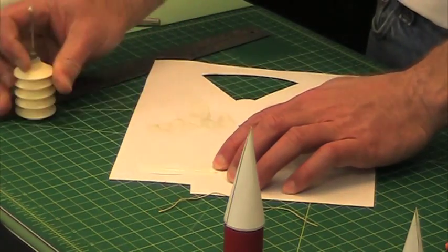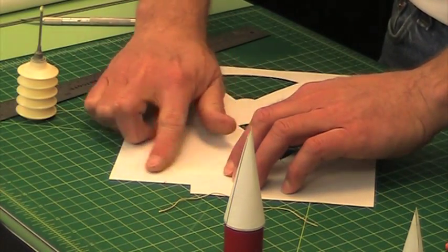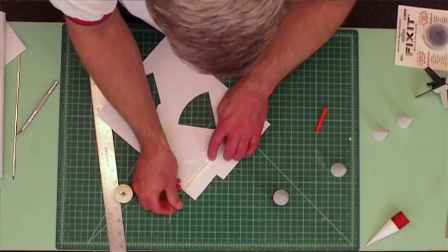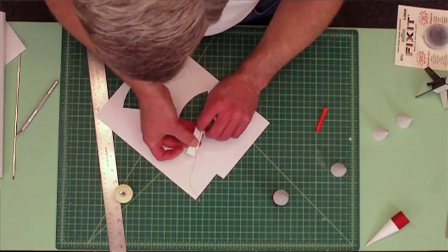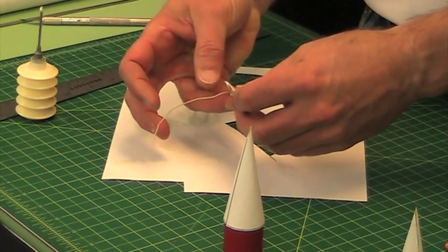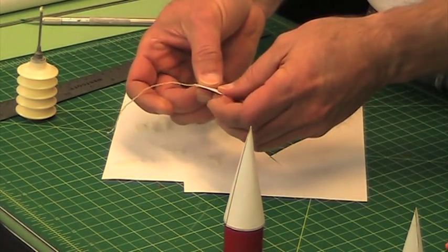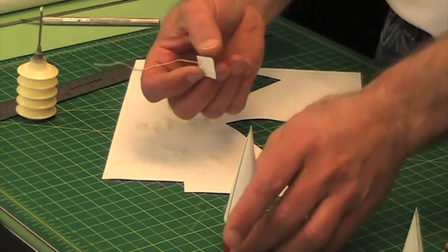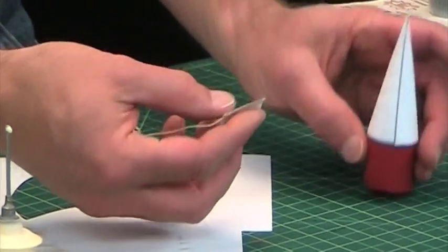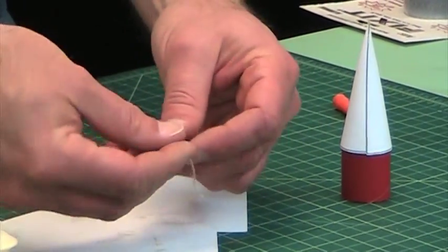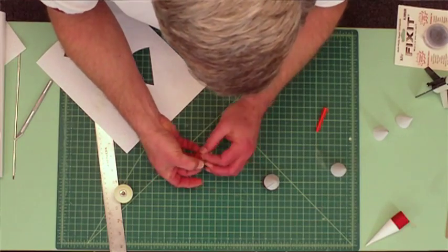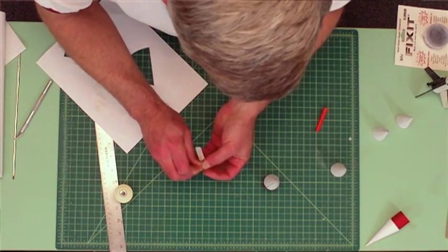Smear some glue on it. Lay the shock cord at a diagonal across it and fold it over twice. Like that. And I need to conform it to the curvature of the nose cone. Like that. And before I glue it in, I'm just going to take it, double it over, and tie a knot in it. And this will be a good point to attach our nose cone to the shock cord and to the parachute.